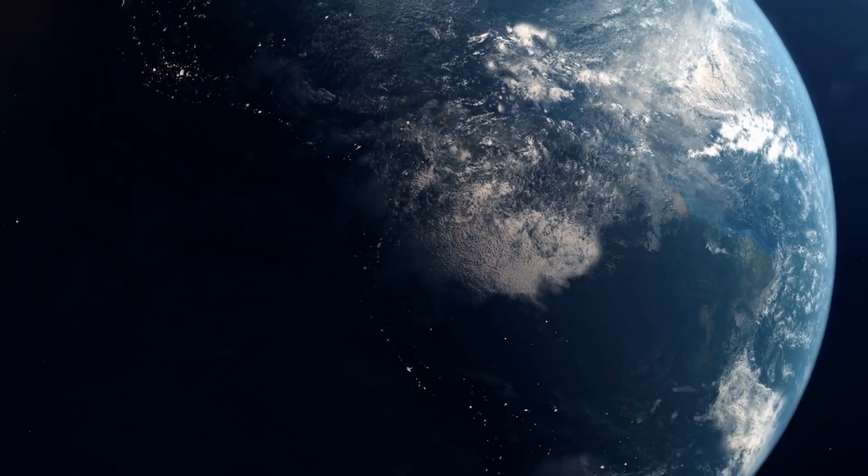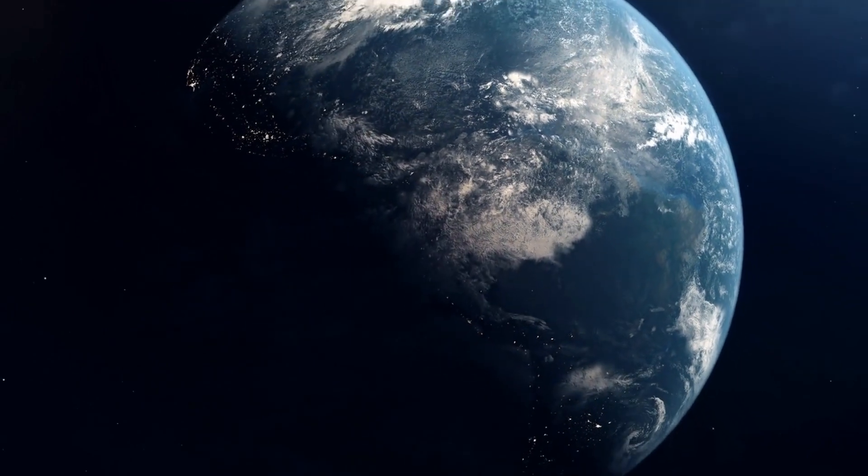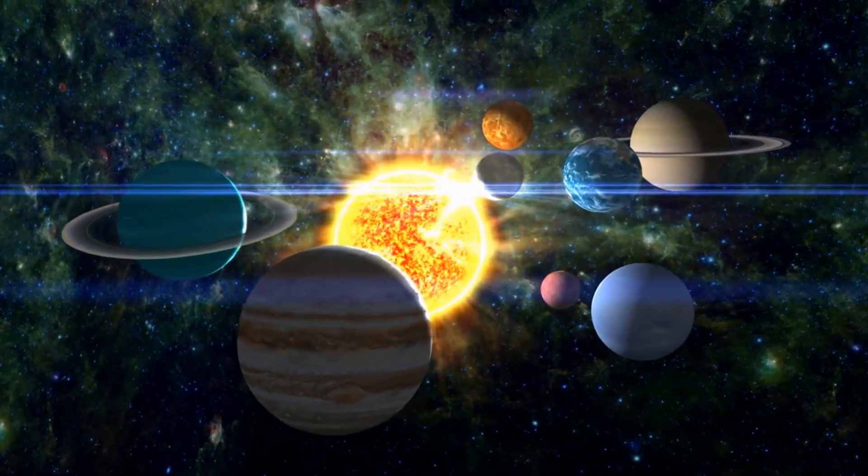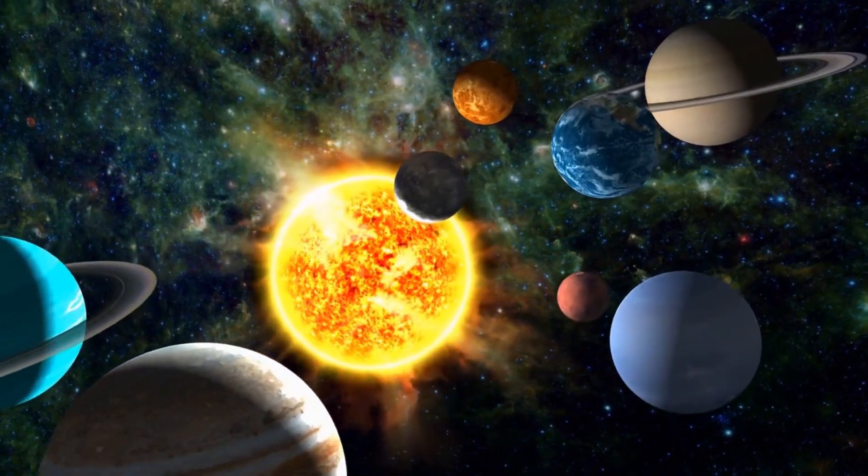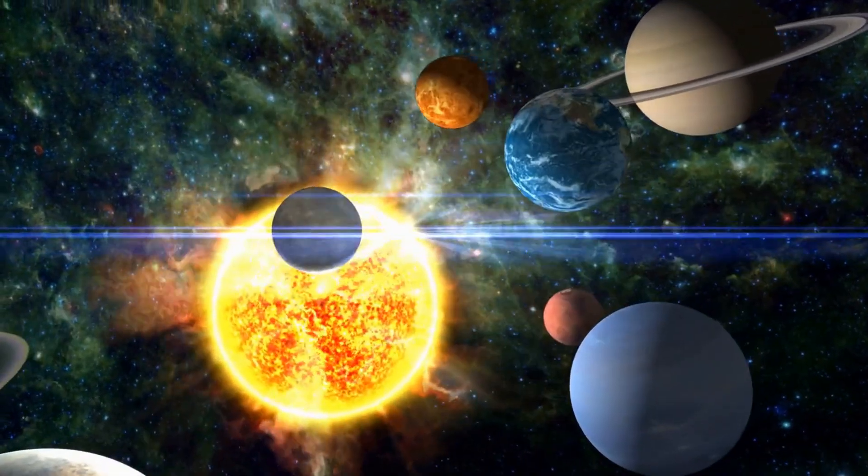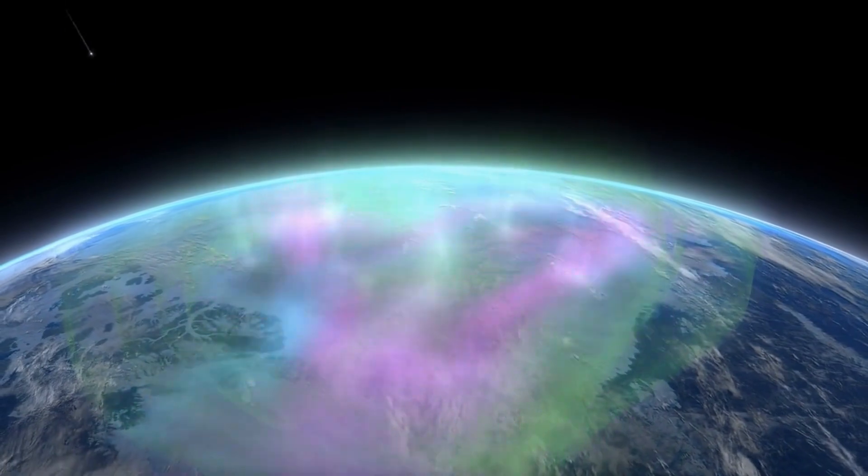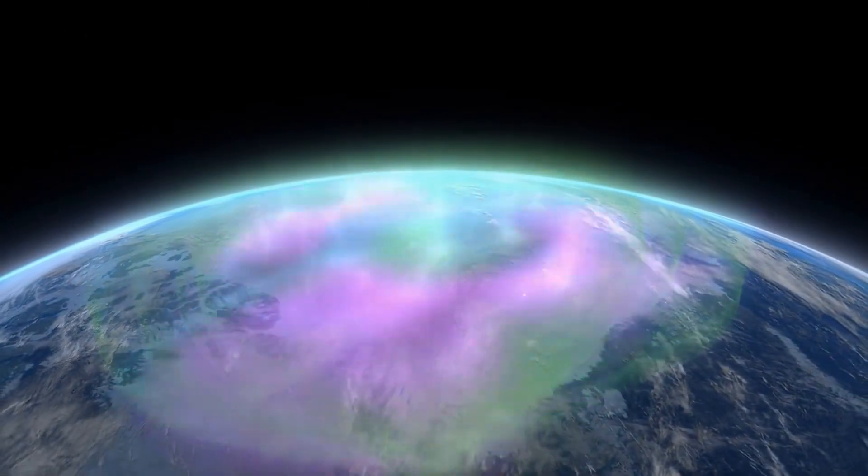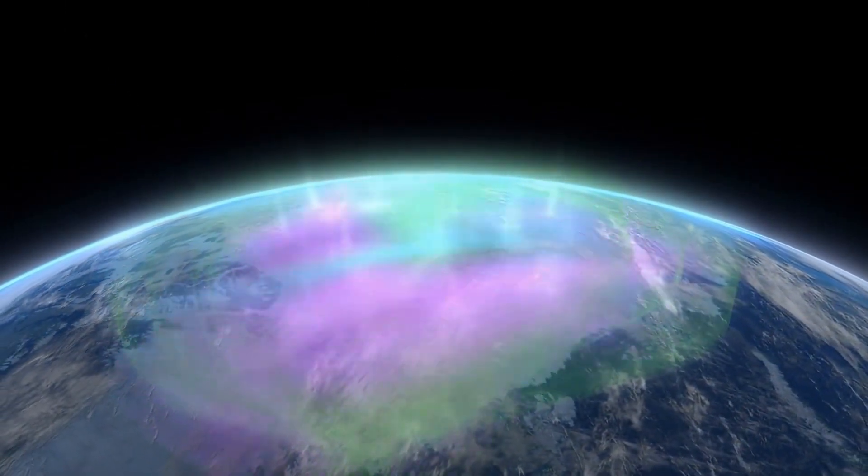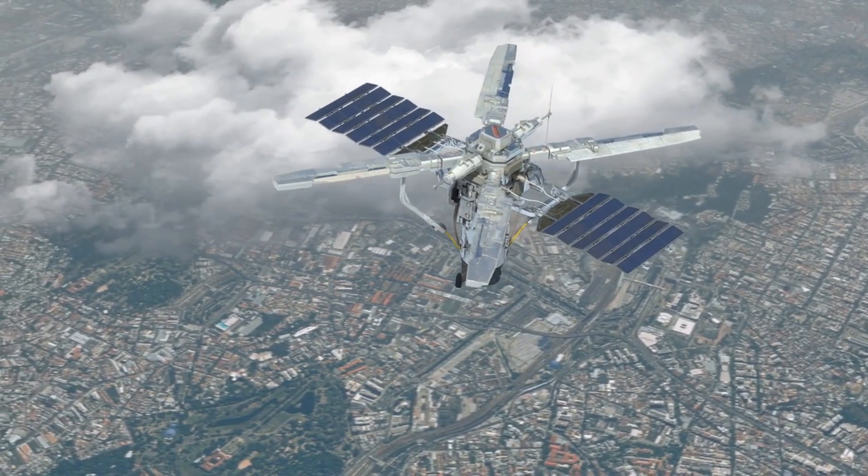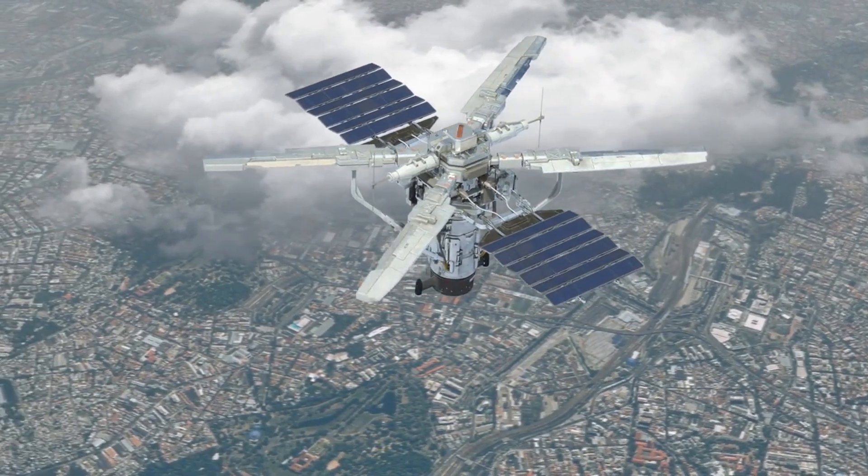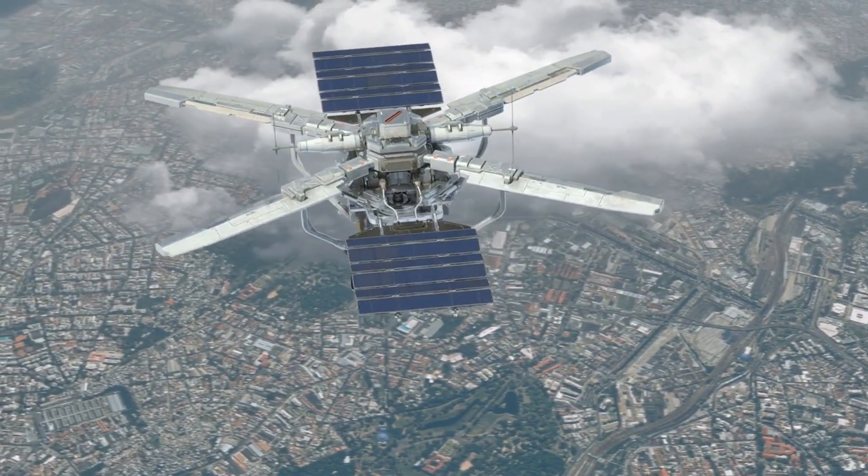Solar flares can have a significant impact on our planet. When a flare erupts, it can release a burst of charged particles known as a coronal mass ejection. These particles can travel through space and reach Earth's atmosphere, causing a geomagnetic storm. Geomagnetic storms can interfere with satellite communications, disrupt power grids, and create beautiful auroras in the polar regions.